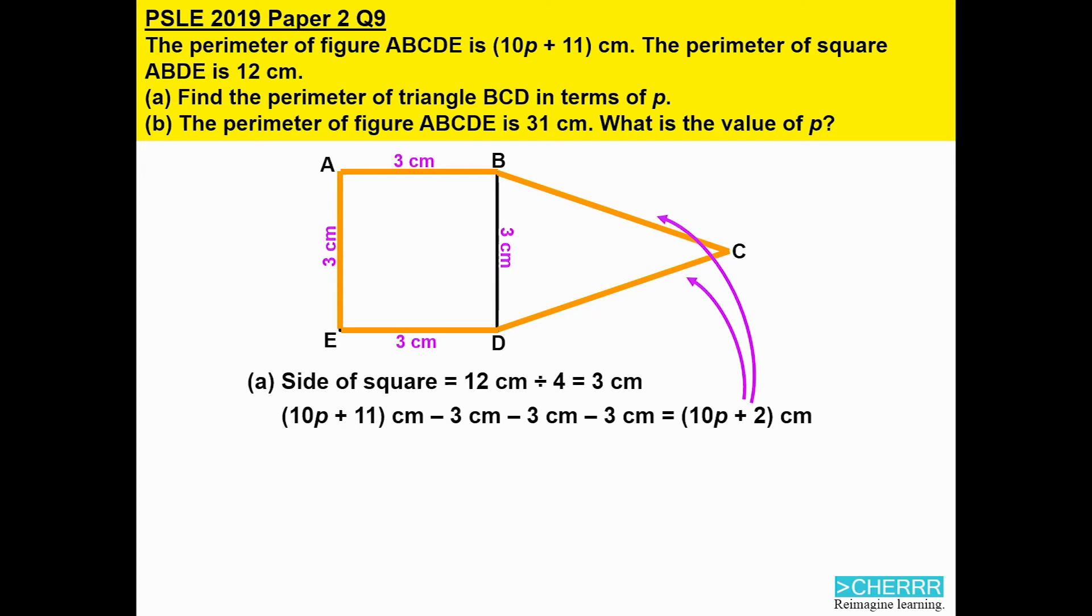To find the perimeter of the triangle, all we need to do is add another 3 centimeters for the line BD. So (10p + 2) + 3 centimeters will get us (10p + 5) centimeters.